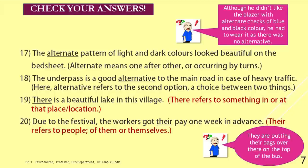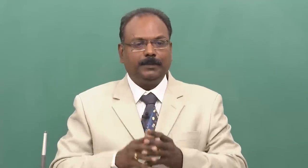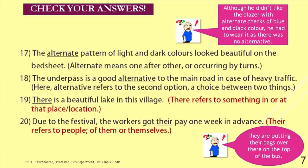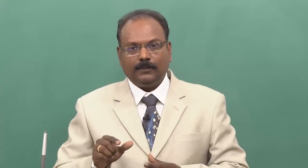For 19: 'There is a beautiful lake in this village.' This is a common error between T-H-E-R-E and T-H-E-I-R. While speaking they sound similar, but in writing people confuse these two. 'There' refers to something in or at that place — that location. When it is T-H-E-I-R, it is a pronoun referring to people: 'Due to the festival, the workers got their pay one week in advance.' 'Their' refers to people, of them or themselves.